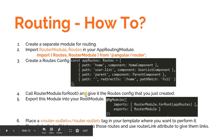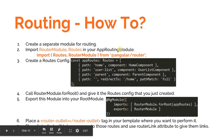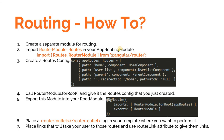Once that is done, we'll import the Router Module and export it from the App Routing Module so that consumers of this module can use it. Then we simply import the App Routing Module in our root module — the App Module — and routing will be available throughout the application.